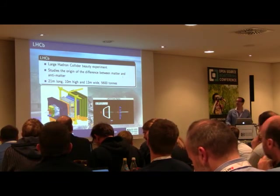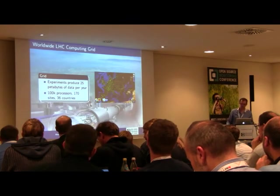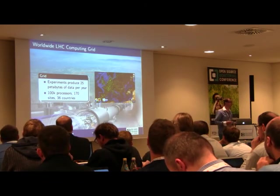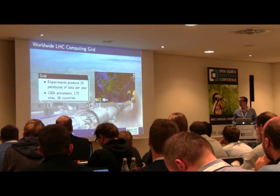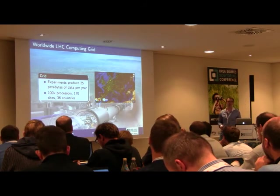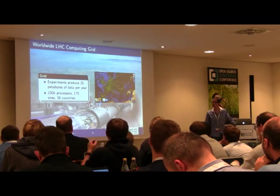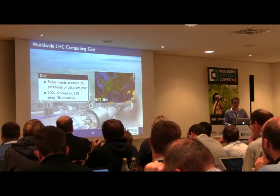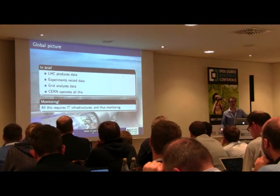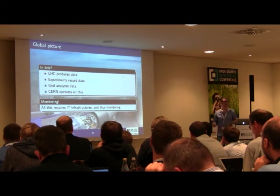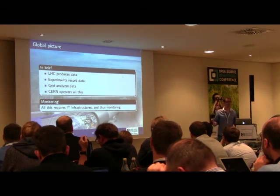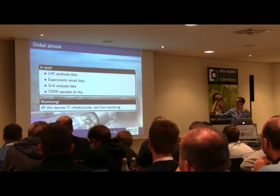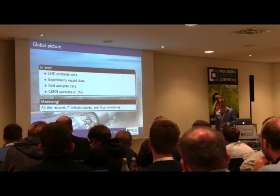Now we have taken our pictures and we need to analyze them. This is done on the grid, which consists of putting together all the computer resources of all the members of the collaboration. The amount of data produced by the experiments is huge — at least 25 petabytes of data per year — so you need big infrastructure to analyze it. The LHC produces the data, the experiments record them, they are analyzed on the grid, and CERN runs the show. All these different steps rely on large IT infrastructure, and this is why we need monitoring.